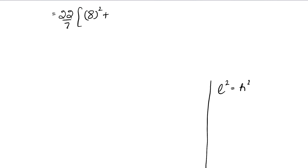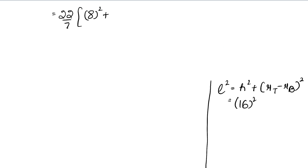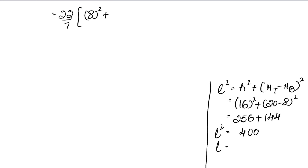L² = H² + (r_top − r_base)²। Height = 16, r_top = 20, r_base = 8। तो L² = 16² + (20 − 8)² = 256 + 144 = 400। L = √400 = 20 cm। Slant height L = 20 cm आ गया।